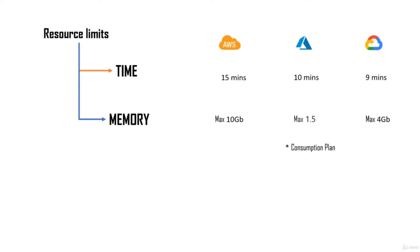These limits differ for other plans. Regarding memory, AWS allocates a maximum of 10 GB for a Lambda function, Azure provides 1.5 GB, and GCP provides 4 GB. These are limits that will keep changing — if the numbers you see are different, that's probably because they've been updated. The time limit and memory will likely keep increasing.